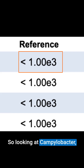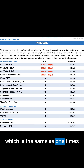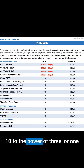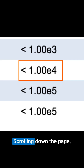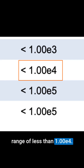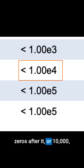Looking at Campylobacter, for example, the reference range is less than 1.00e3, which is the same as one times 10 to the power of three, or one with three zeros after it, which is the same as a thousand. Scrolling down the page, you see Salmonella, which has a reference range of less than 1.00e4, or 10 to the power of four — one with four zeros after it, or 10,000 — and so on and so forth.